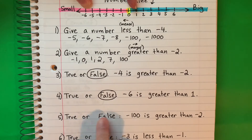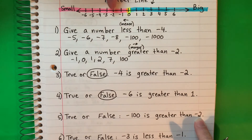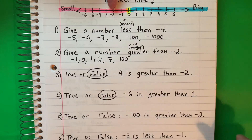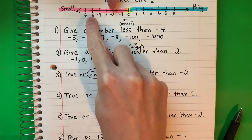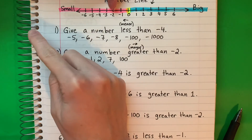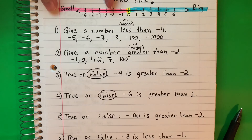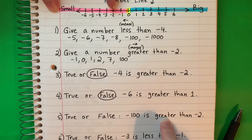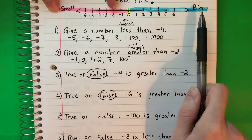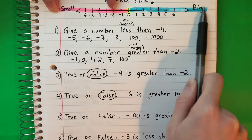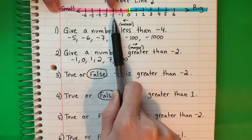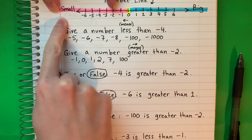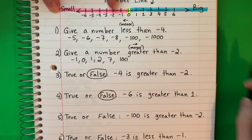True or false? Negative 100 is greater than negative 2. Here's negative 2. Where is negative 100 — donde está negativo 100? It's going to be to the left — negative 1, negative 2, negative 3... all the way to negative 100. So negative 100 is on the left. Greater means big — grande — so I want the one on the right, quiero el que está a la derecha. That's negative 2. Negative 2 is greater — negativo 2 es mayor que negativo 100. This is also false — también falso.